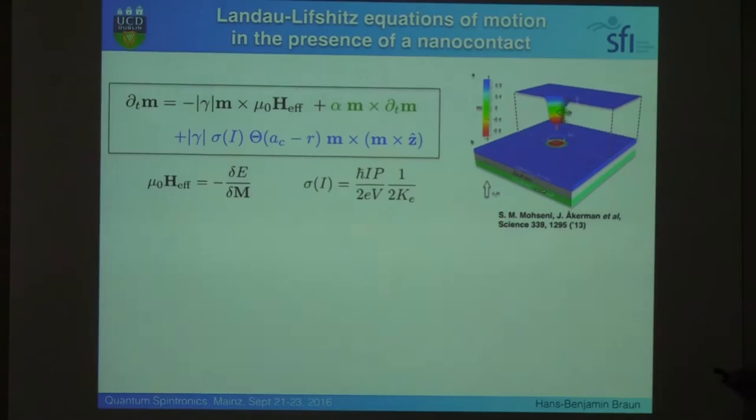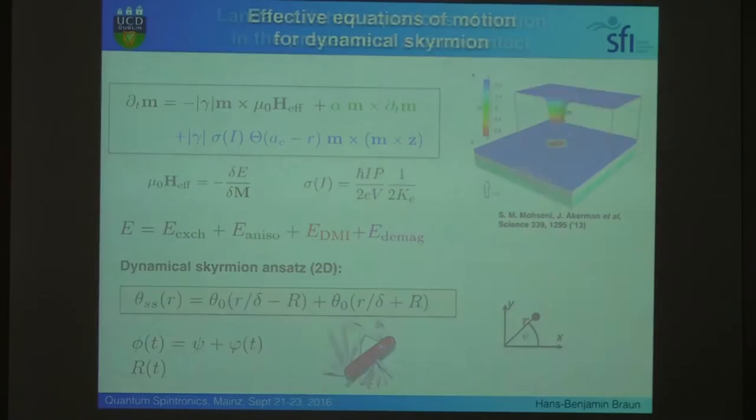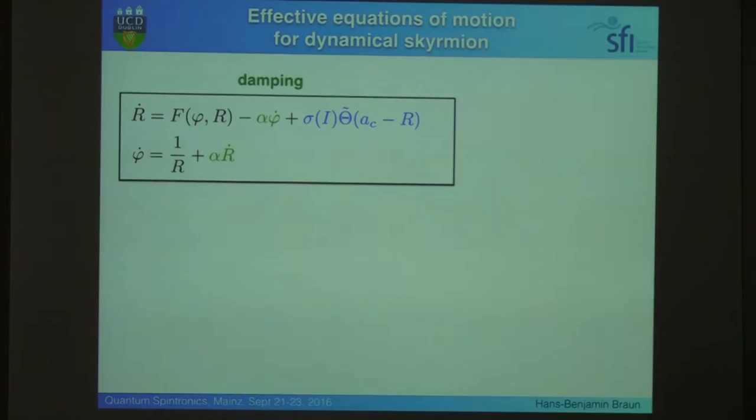This is the Landau-Lifshitz equation, together with a spin torque and damping. So you have a nano contact, you inject the spin current, and you get out your Swiss army knife again, and stick it into your equations of motion.